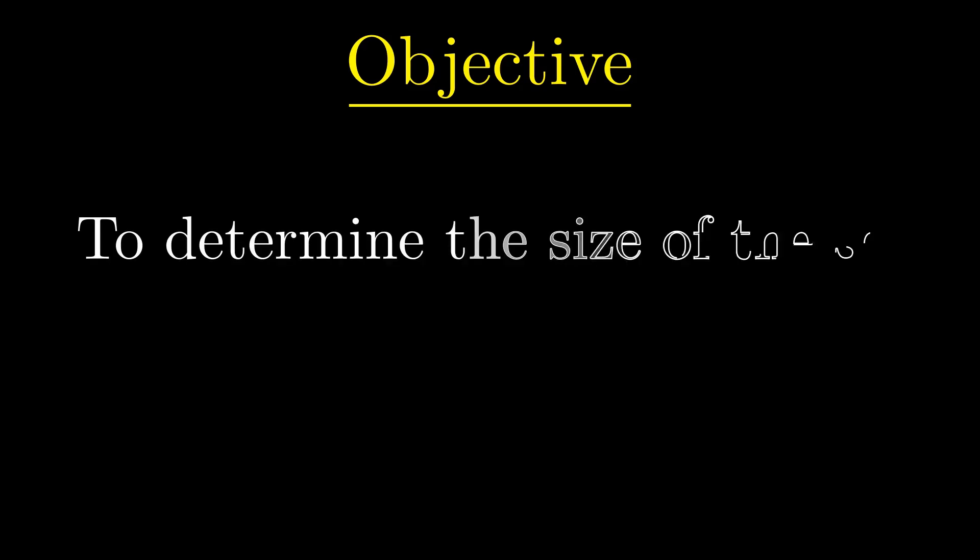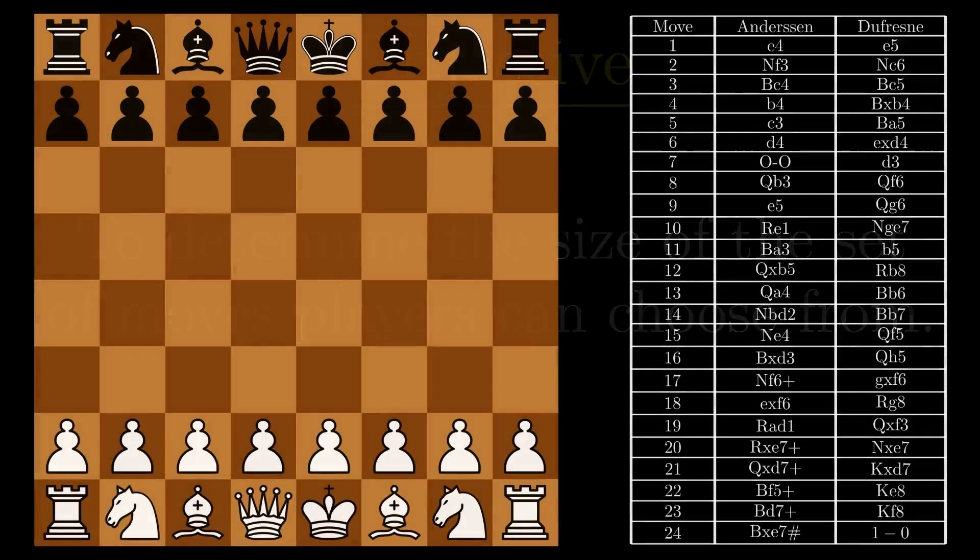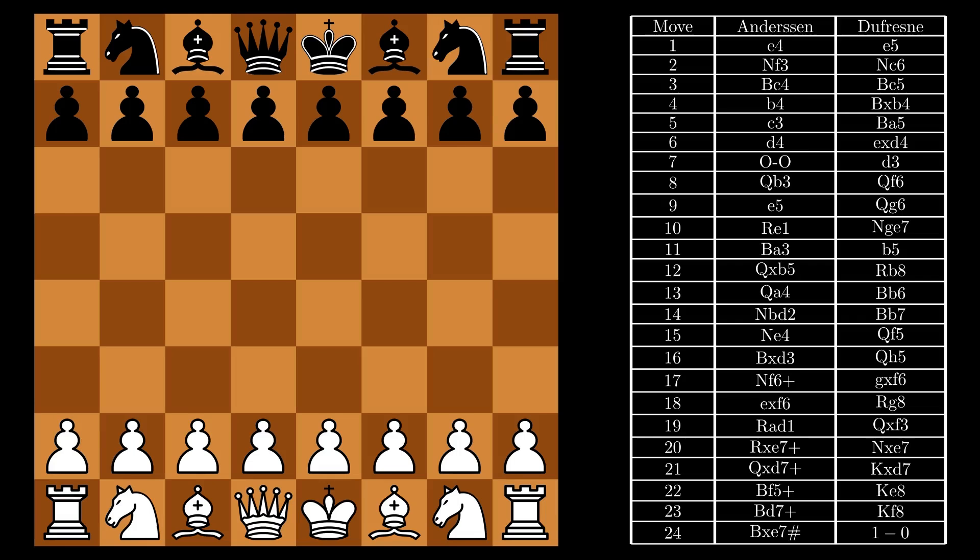In this video, I'm trying to determine how large of a set of moves players have to choose from in the game. Helpfully, the moves in a chess game are recorded in Portable Game Notation, or PGN, and on the screen now is the PGN for the Evergreen game.